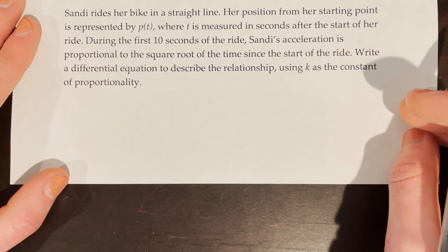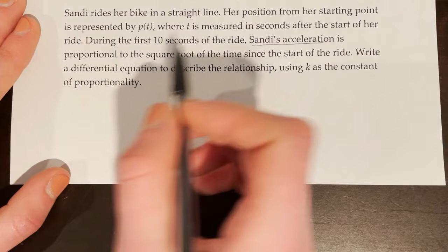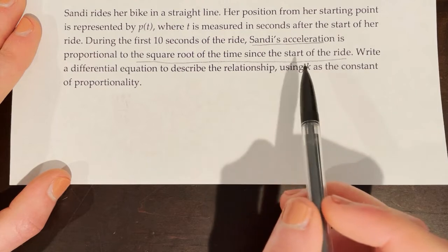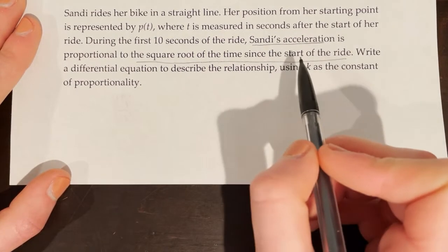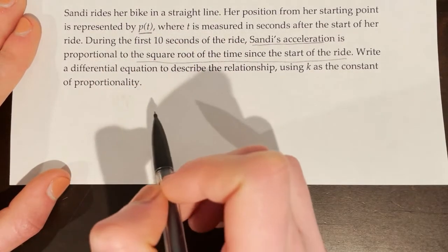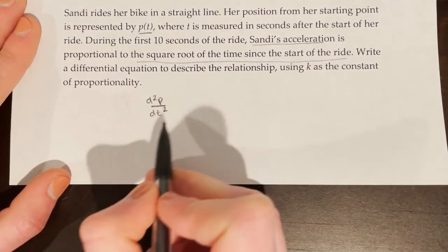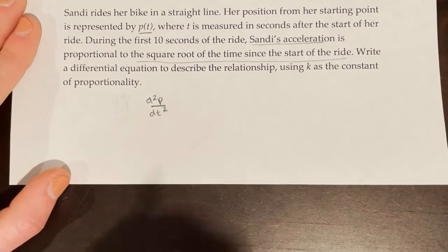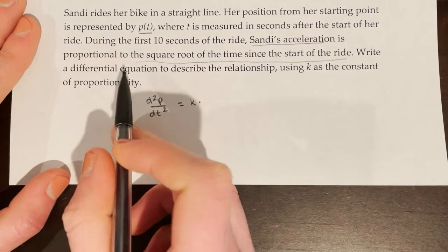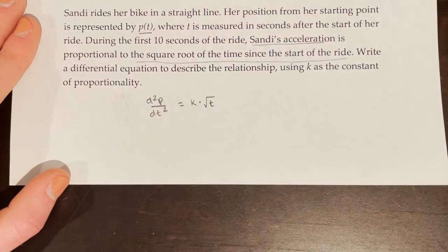The first thing to do when faced with one of these questions is think: what is proportional to what? We know that Sandy's acceleration is directly proportional to the square root of the time since she started the ride. Thinking back to our lesson from chapter 4 on acceleration, velocity, and position, acceleration is the second derivative of position. So since we're given position, we write the second derivative of p of t. This is really Sandy's acceleration, so if her acceleration is proportional to something, it is equal to k times the square root of t. This is our answer.